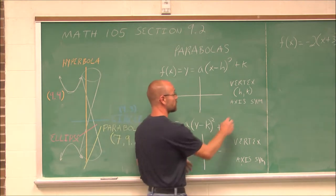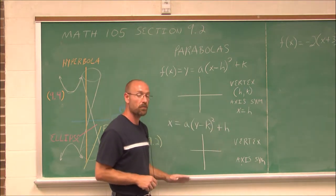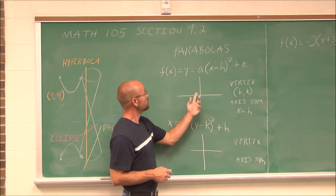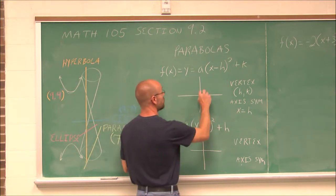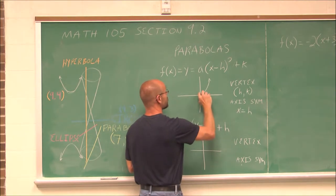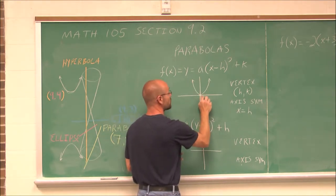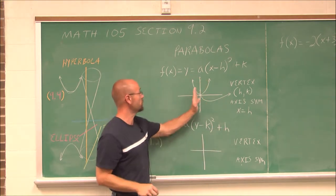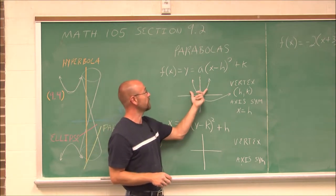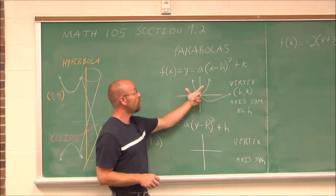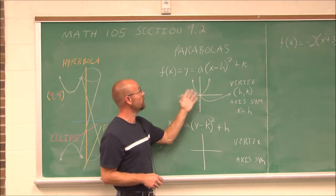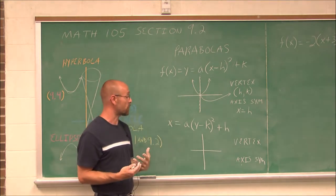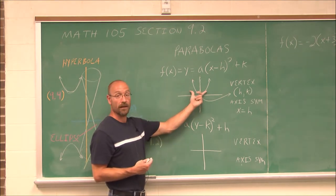Axis of symmetry is when x equals the h value — that vertical line forms the axis of symmetry, where everything to the left mirrors the right. On a graph, if a is positive, the parabola opens up, with vertex at h, k. The axis of symmetry shows the reflection to the right and to the left. It opens up if a is positive, or opens down if a is negative. So we know this about a parabola.